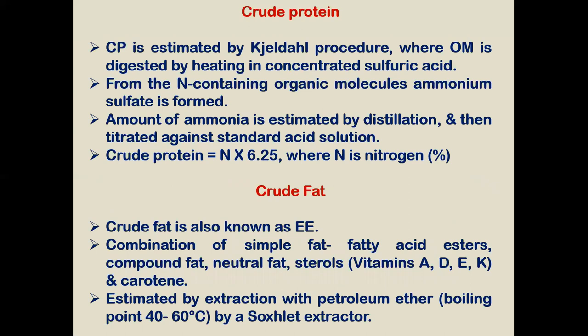Crude protein is very much important to know the feed quality, to know the protein content, and to know the protein-rich feeding ingredients, whether from vegetable or animal sources. NIRS — near infrared spectroscopy — can also estimate the protein content and approximate composition of the feed automatically.